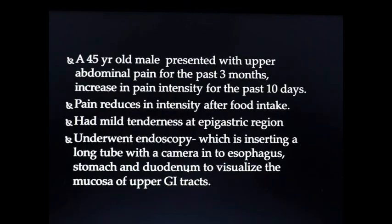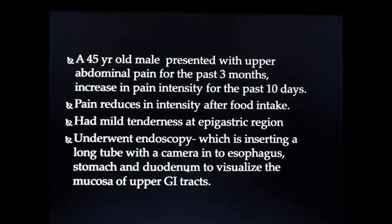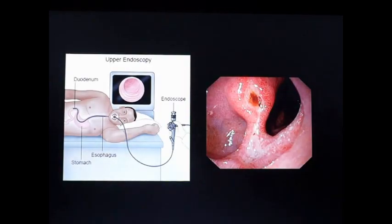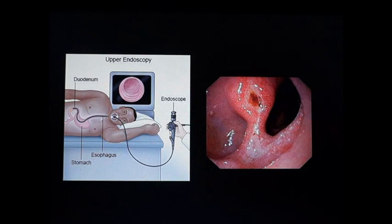The case is a 45-year-old male presented with upper abdominal pain for past 3 months, increase in pain intensity for past 10 days. Pain reduces in intensity after food intake, had mild tenderness at epigastric region. He underwent endoscopy, which involves inserting a long tube with a camera into the esophagus, stomach and duodenum to visualize the mucosa of the upper gastrointestinal tract. After viewing, there is a pathology seen in the wall of the duodenum.